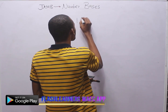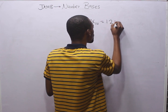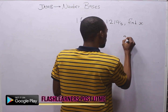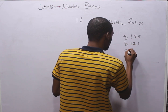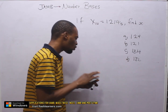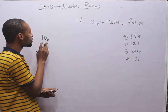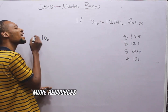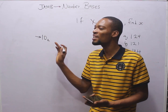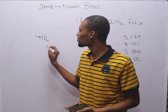Look at the first question: if S base 10 equals 1214 base 5, find S. The options are 124, 121, 184, and 181. This question is under number bases. Note: if you see 10 base 2, it is wrong to call it 'ten base two' — it is an abomination in mathematics. It is 'one zero base two.' You are only permitted to call it ten if there is nothing written, meaning it's naturally in base 10.